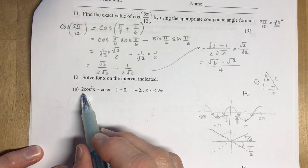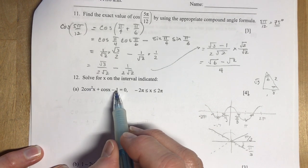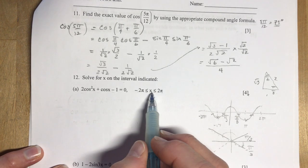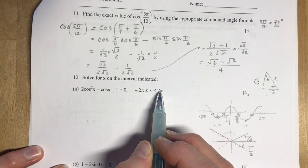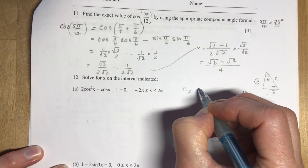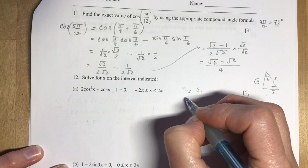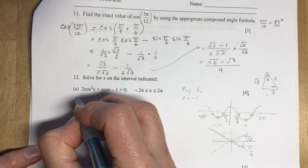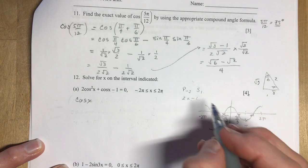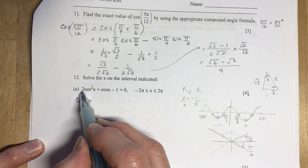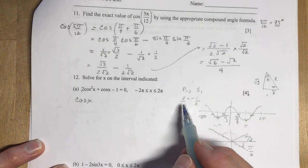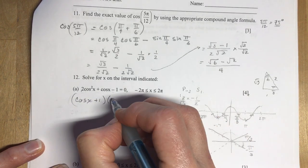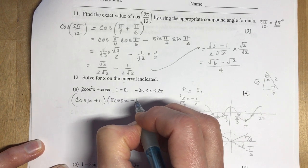Solve for x on the interval indicated. So it's a quadratic, right? Look, squared, single power, constant. So I want to go between minus 2π and 2π. Make sure you check your interval so you're giving all the solutions that are required. So if I factor this, I'm looking for a product of minus 2 and a sum of positive 1. So that gives me 2 times negative 1. This gives me cos of x.